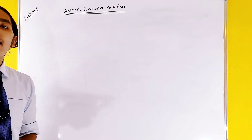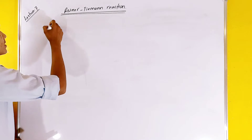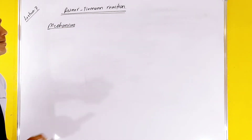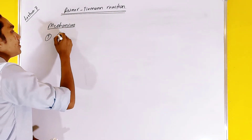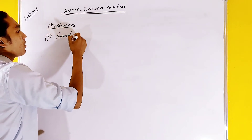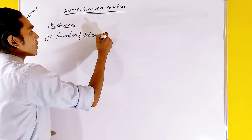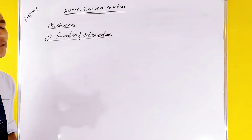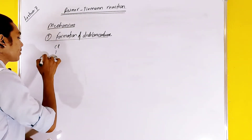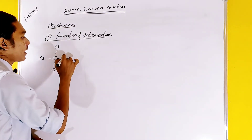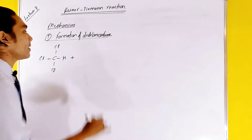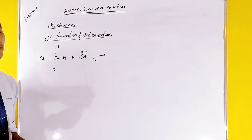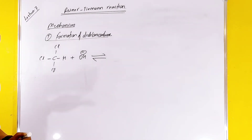First, we will do dichlorocarbene formation. This is the mechanism — first of all, formation of dichlorocarbene. We call it a simple way to carry out this step.